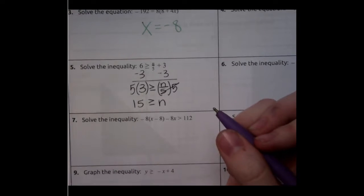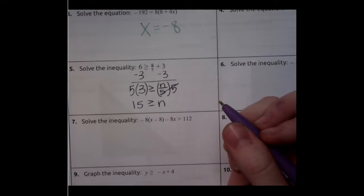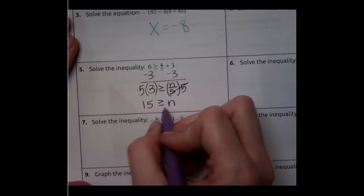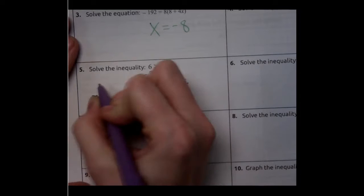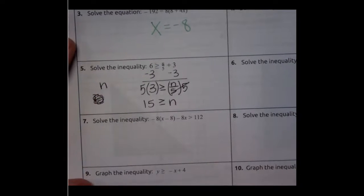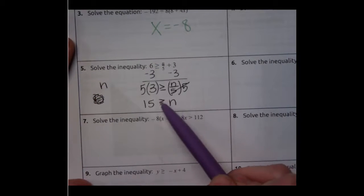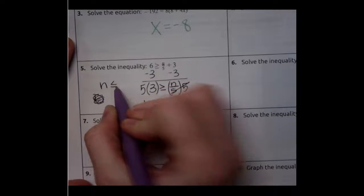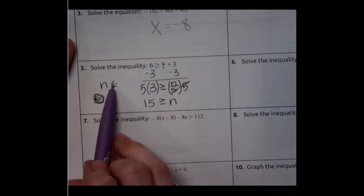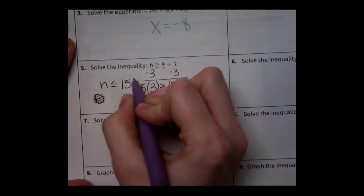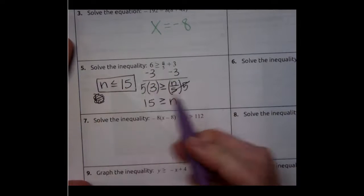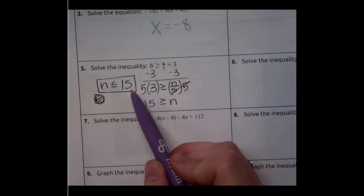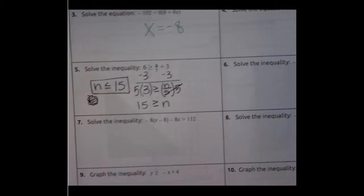Now that is the answer but we like to write the answer where the n comes first because it's easier to read the problem. So we're going to take the n and put it in the front. The arrow of our symbol is kind of pointing towards n, so I still need it to point towards the n. I'm just flipping around the whole thing. And the 15 is going to go on this side. So we can have any numbers for our solution that are less than or equal to 15.